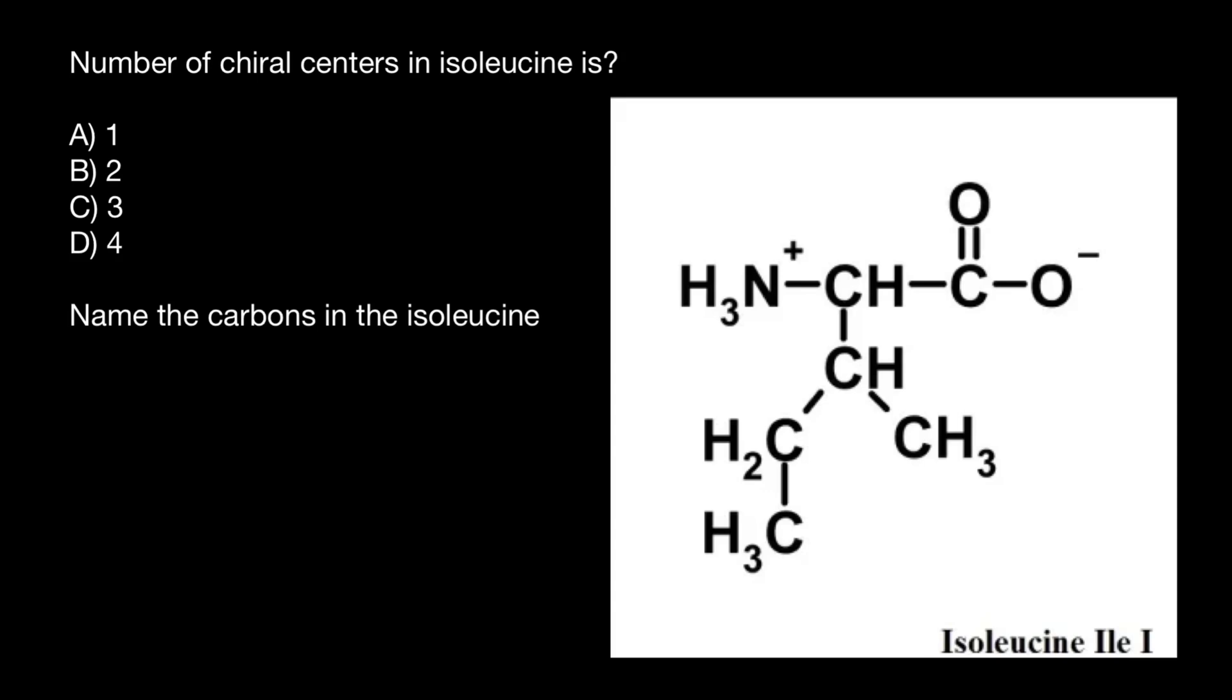Hello and welcome to Nikolai's genetics lessons. The first question is, number of chiral centers in isoleucine is, and you have to choose one of these answers.